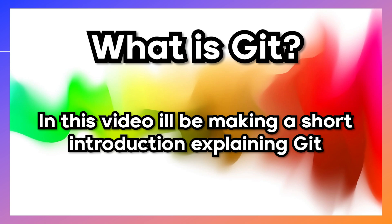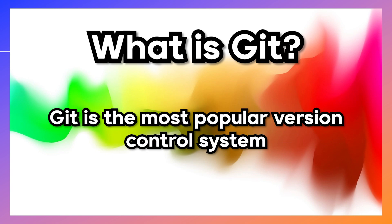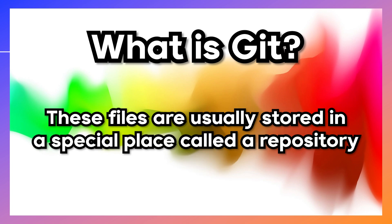In this video I will be making a short introduction explaining Git. So let's start off with what is Git. Git is the most popular version control system. A version control system keeps track of changes made in a set of files. These files are usually stored in a special place called a repository.